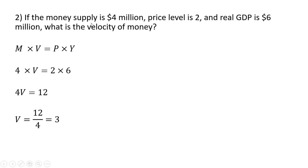Example two: if the money supply is 4 million, the price level is 2, and real GDP is 6 million, what is the velocity of money? Starting with the quantity equation and plugging in the known values, we solve for the unknown — the velocity of money. So 4V equals 2 times 6, or 12; dividing by 4, the velocity of money is 3. On average, a dollar is spent three times on the goods and services that make up GDP.